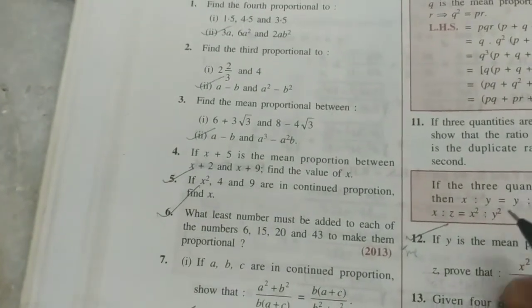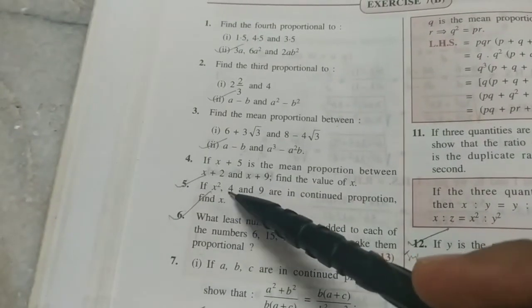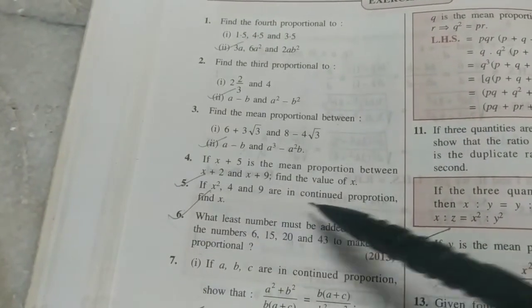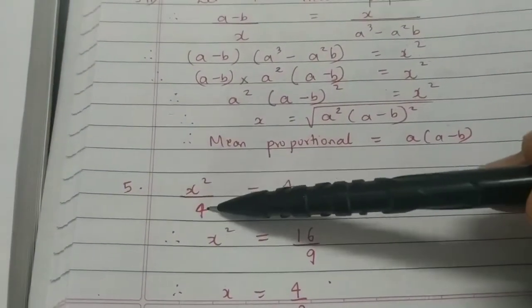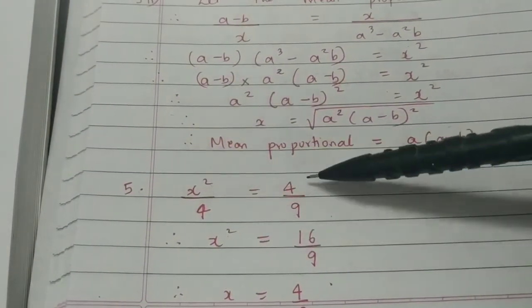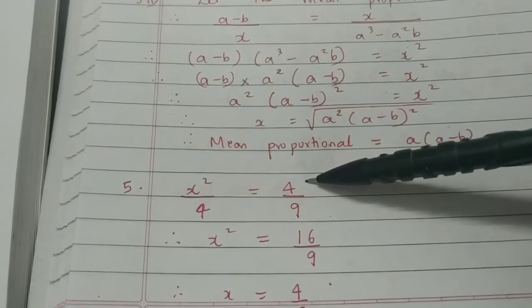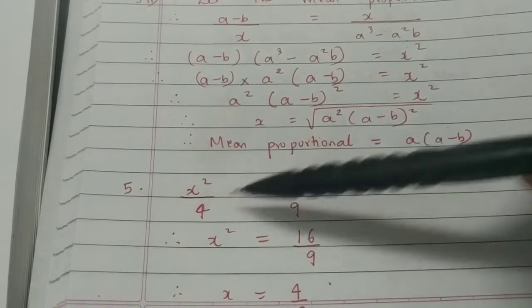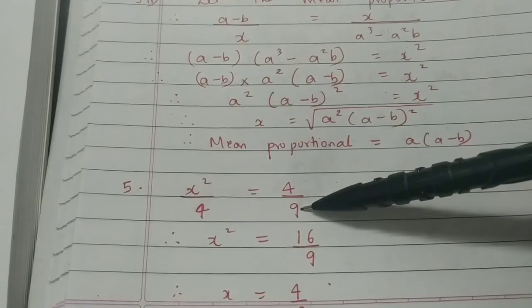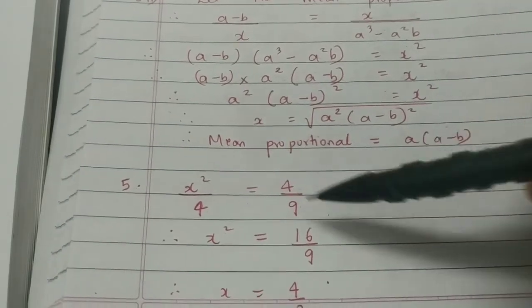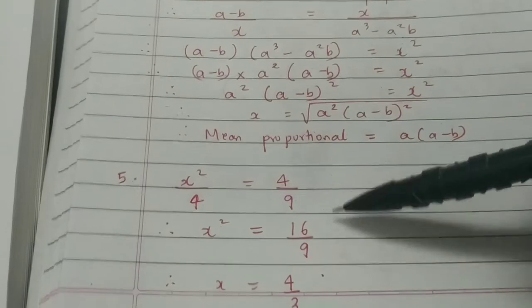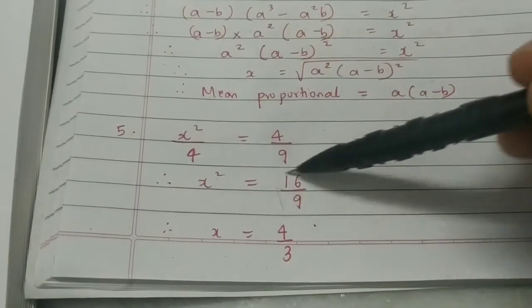Now the fifth sum. If these three terms are in continued proportion, find X. Continued proportion means that the denominator of the first fraction is the same as the numerator of the next fraction — that means A upon B is equal to B upon C. There is no fourth proportional in such cases. Just cross multiply them and get the final answer. We have to remove the square root here, of course.